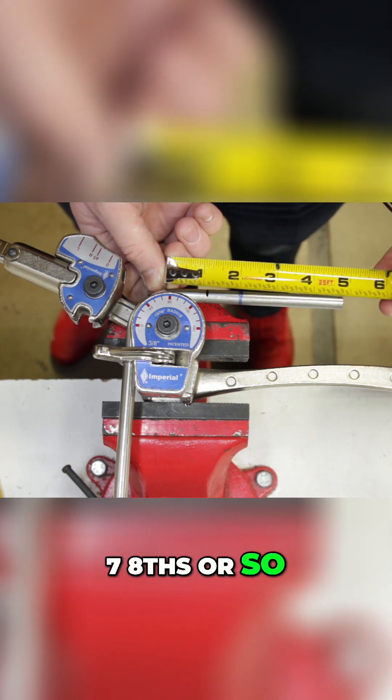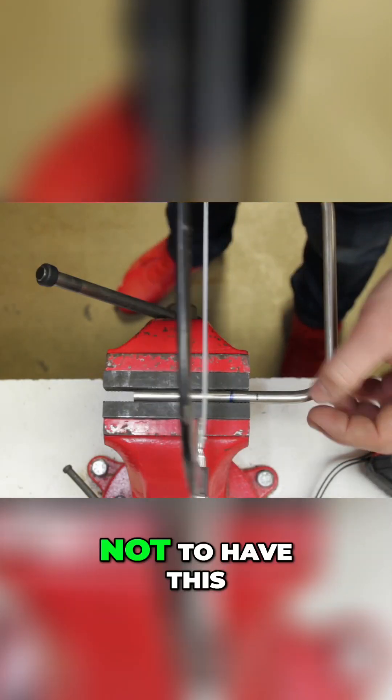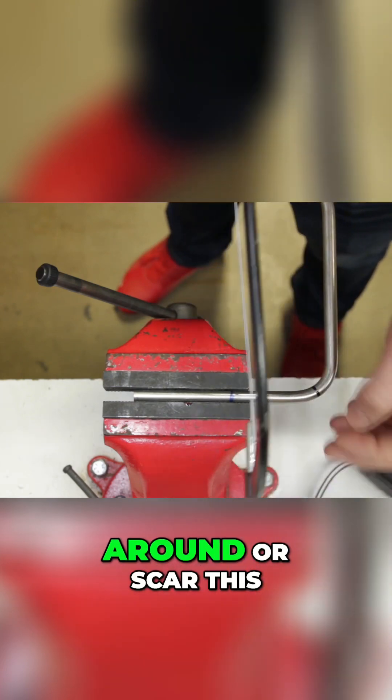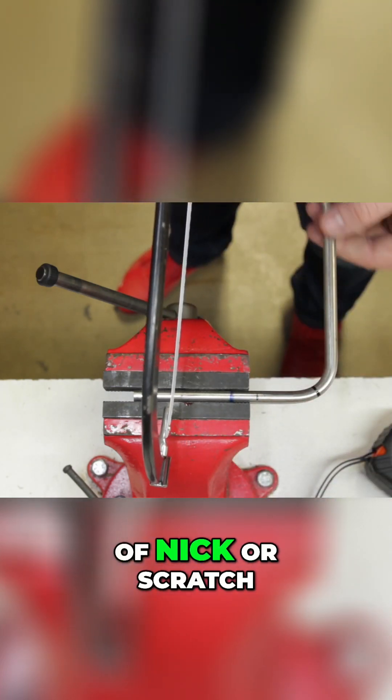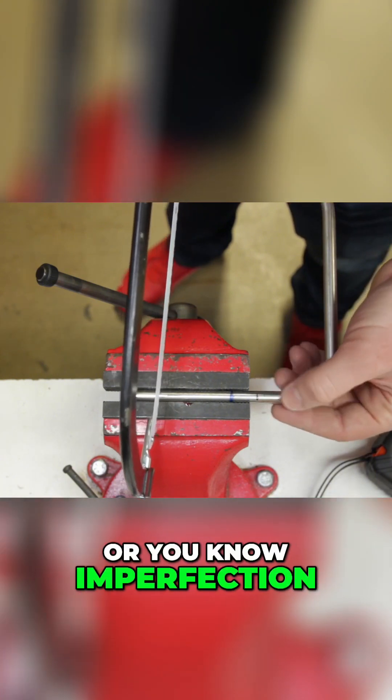Now you want to be real careful not to have this hop around or scar this up, because any kind of nick, scratch, or imperfection in this tubing can become a weak point, especially if it's in the area where the ferrules are going to be biting.